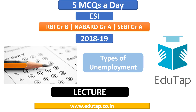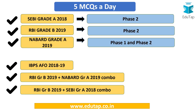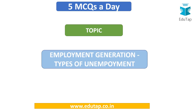This particular topic is very much important under ESI as it has a subtopic called Employment Generation. Before proceeding, let me quickly tell you about the various courses we are offering: SEBI Grade A, RBI Grade B and NABARD Grade A as well as Combo courses. We are also offering IBPS AFO, Specialist Officer Exam Test Series and video course. ESI is important in SEBI Grade A, RBI Grade B and NABARD as well. Today's topic is Employment Generation under Types of Unemployment.